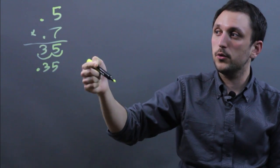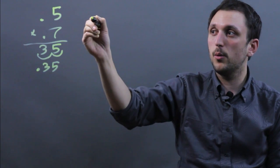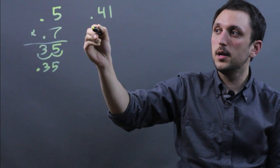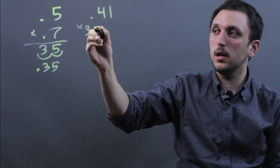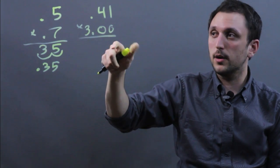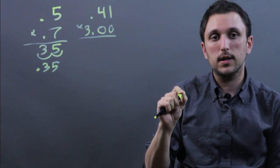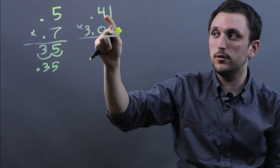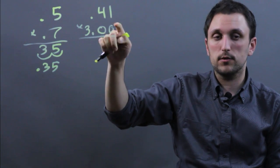Now if you're multiplying say a decimal by an integer, so 0.41 times 3.0, here it can get a little bit trickier but you're still only going to carry the decimal two times because of 1, 2. There's only two numbers to the right of the decimal.